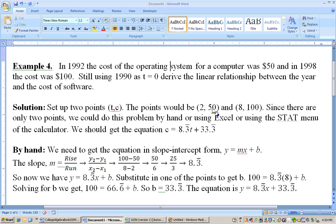So the points would be 2 comma 50, because the first one is 1992, so that's two years after 1990, and the cost was $50. And the other point was 1998, so that's eight years after 1990, and the cost was 100, so here's my two points.